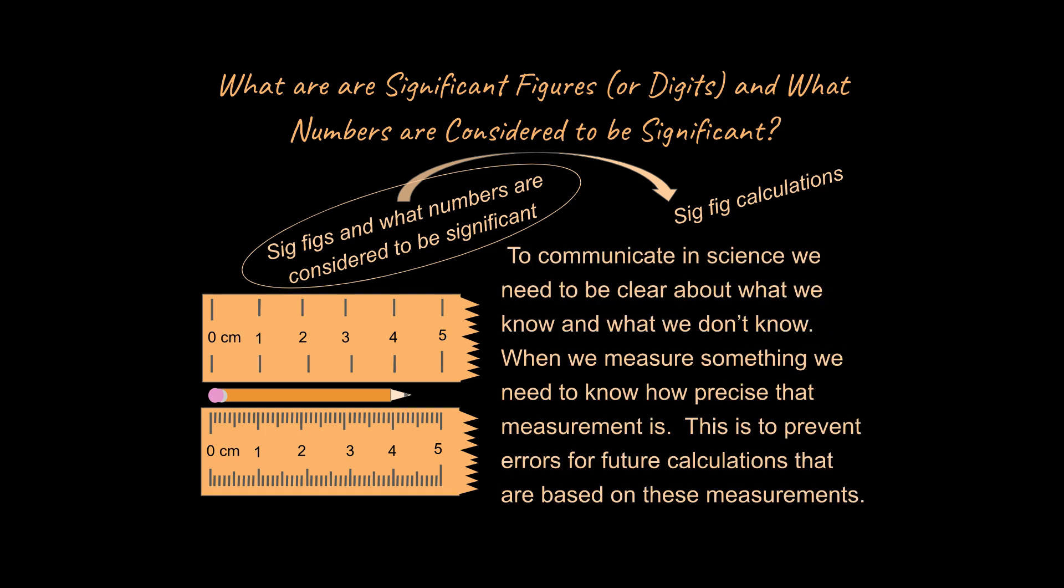I do want to say that in science we need to be clear about what we know and what we don't know. And when something is measured we need to communicate how precise that measurement is. And the reason for that is because we want to prevent future errors in calculations that we're going to make based on those numbers. So if you've ever done a calculation where you multiplied two numbers together and you got a long string of digits to the right of the decimal place, that shows the problem that we're eventually going to get to in our second lesson. We want to avoid communicating that we have been more precise than we have with our measuring devices.